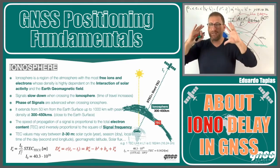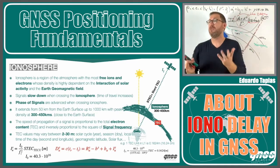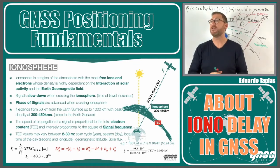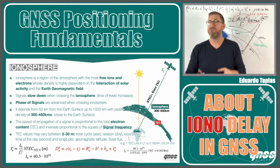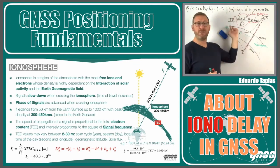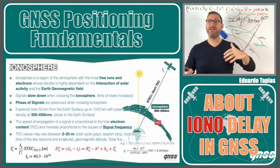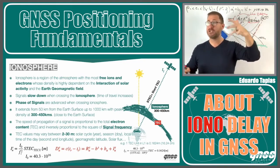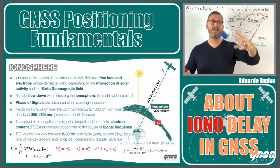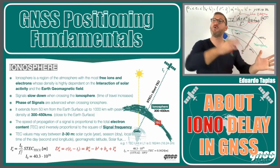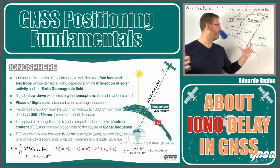Usually the order of magnitude to keep in mind is that this ionospheric delay can go from 2 meters to 30 meters — depending on where we are, the day, the year, the solar flux, the geomagnetic field. These kinds of conditions mean it can range from 2 meters to 30 meters of delay.